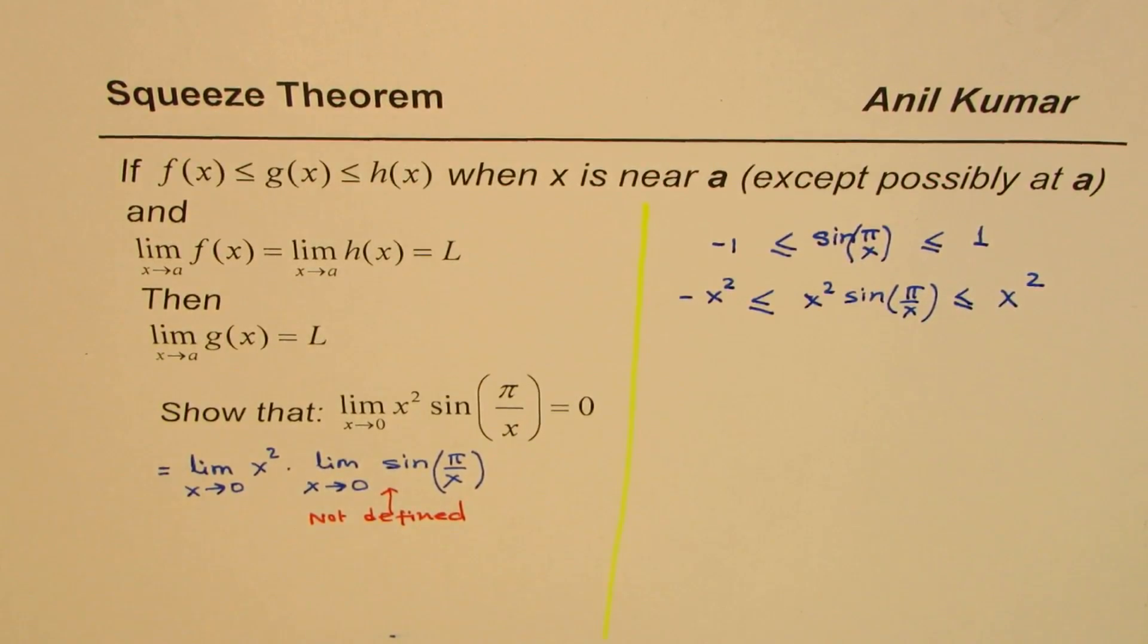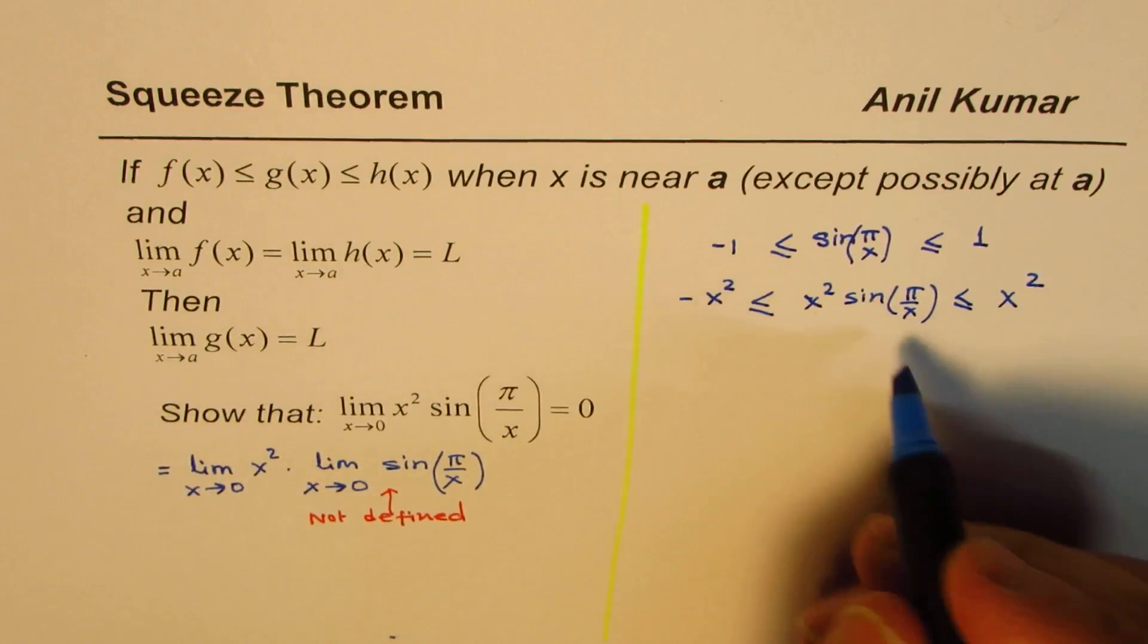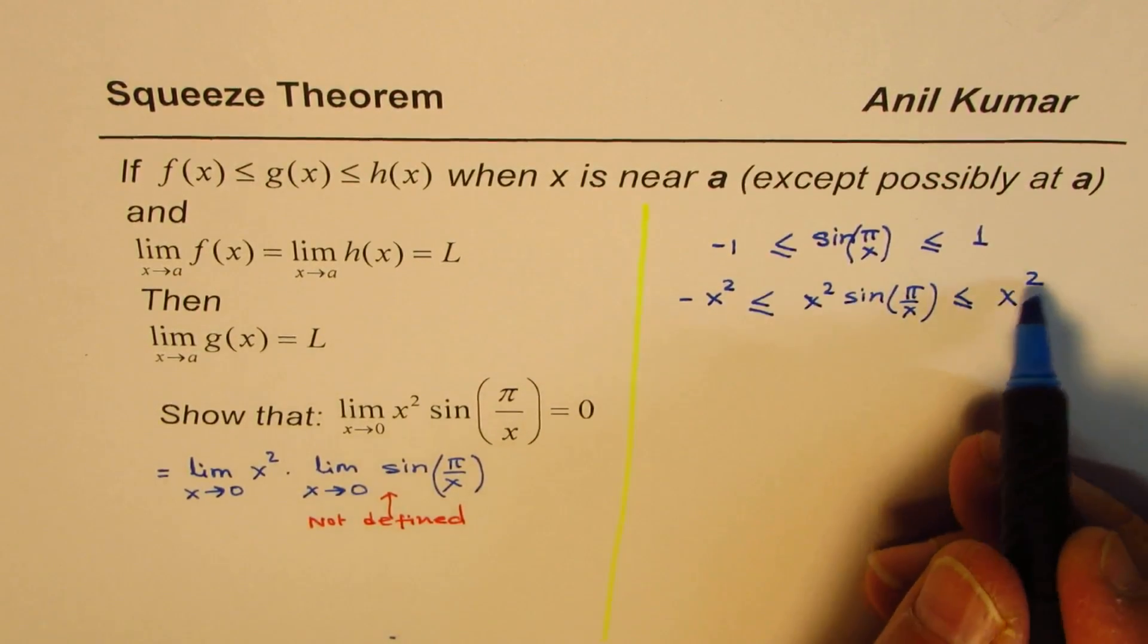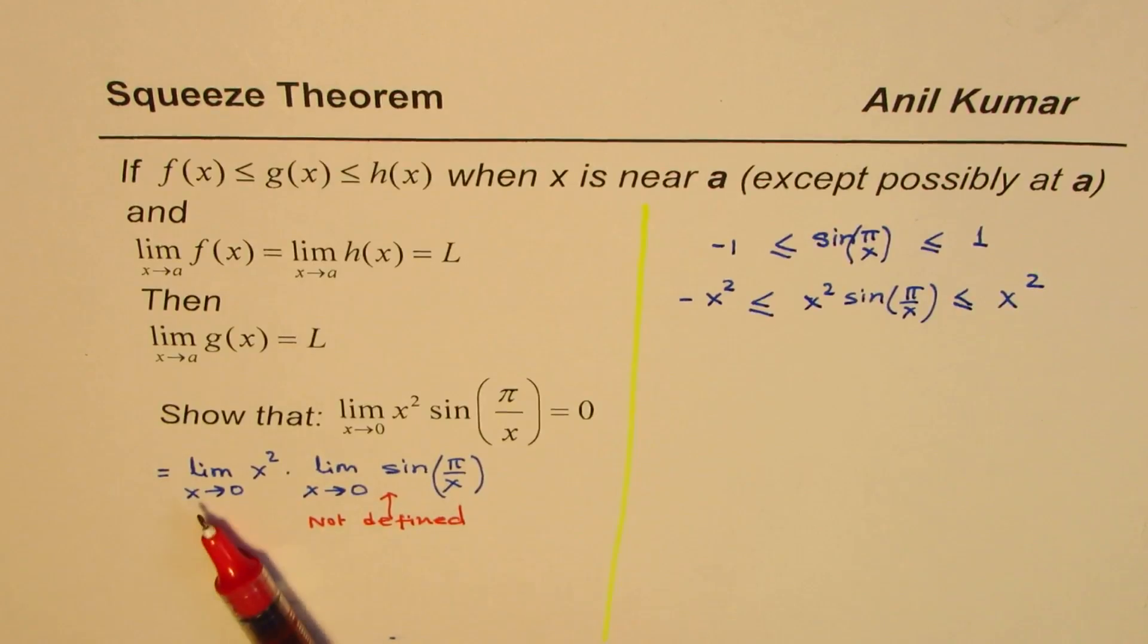Now, if you see the scenario, we have this function between these two. We want to find the limit of this function as x approaches 0. So let me sketch this scenario now.